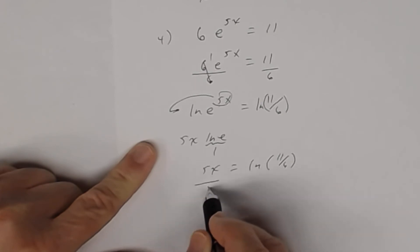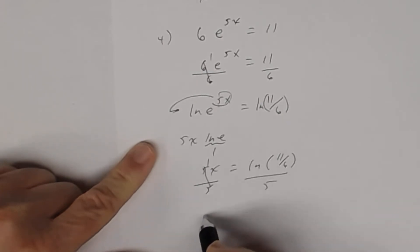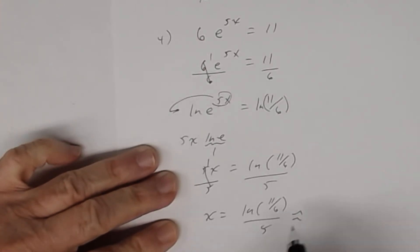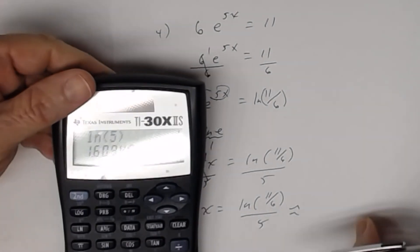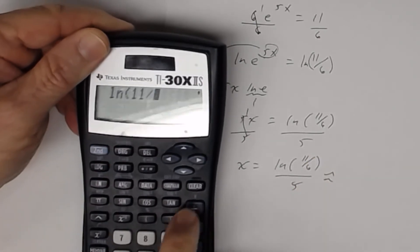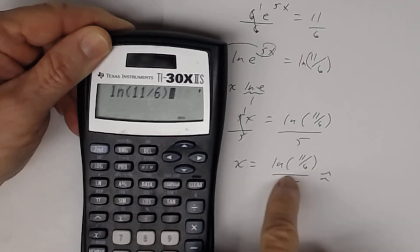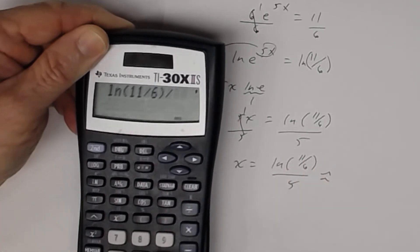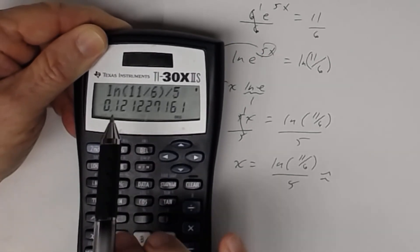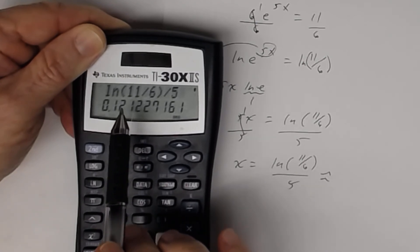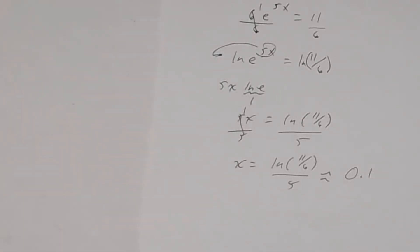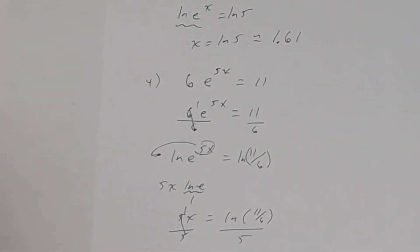Divide both sides by 5: x = ln(11/6) ÷ 5. On your calculator: ln(11 ÷ 6), close parentheses, divide by 5. Rounded to the nearest tenth — the hundredths digit is 2, which is < 5, so it stays — the answer is approximately 0.1.